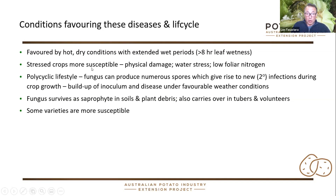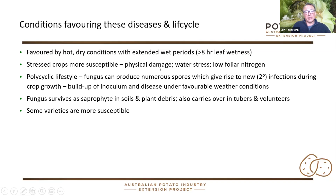Stressed crops are more susceptible, particularly if there's other physical damage — things like heavy rain, hail, wind — all of those things that damage the foliage will enable the Alternaria species to get in a lot more easily.